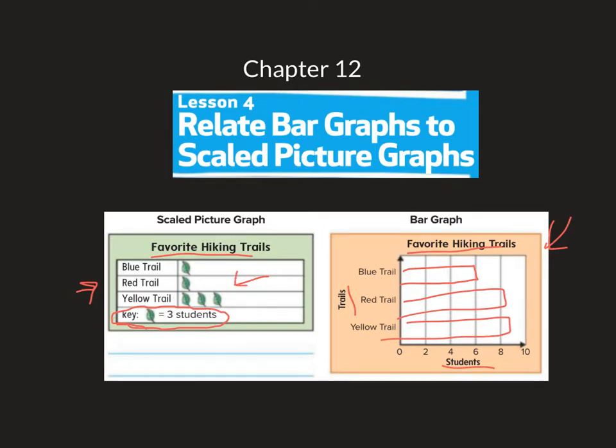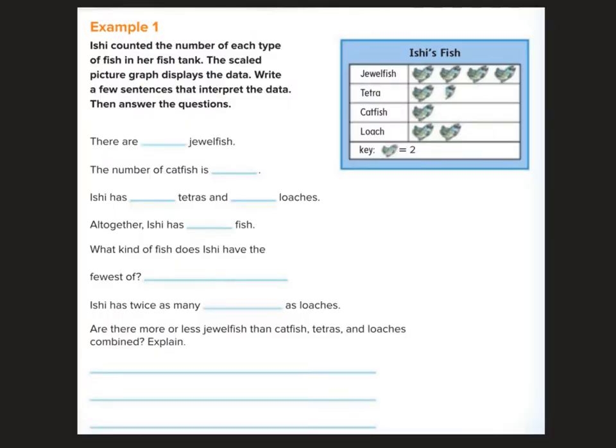Let's get started. Ishi counted the number of each type of fish in her fish tank. The scaled picture graph, why is it scaled? Because of the key, displays the data. Write a few sentences that interpret the data, then answer the questions. There are blank jewelfish. Each one equals two, so 2, 4, 6, 8, so I have eight jewelfish.